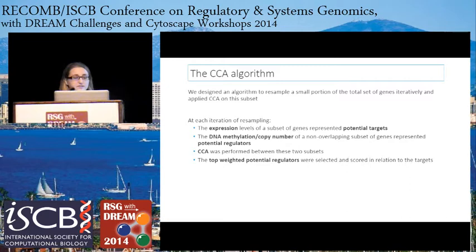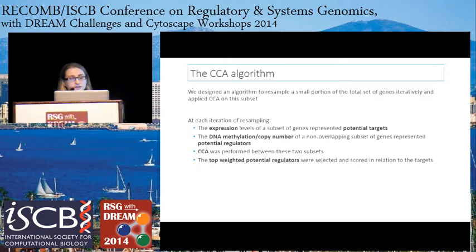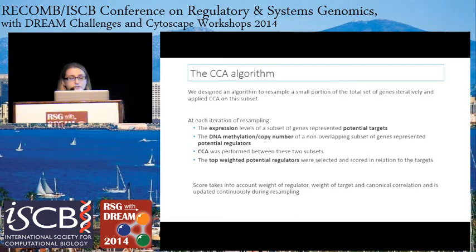At each iteration of resampling, you take the expression levels of a subset of genes representing potential targets — say five genes out of 25. Then you take the DNA methylation or copy number of a non-overlapping subset of genes, which represent your potential regulators. CCA is applied between the two subsets, and the top weighted regulators are selected and scored in relation to the targets. The scores take into account the weight of the regulator, the weight of the target, and the canonical correlation between the two subsets, and that is continuously updated during resampling.